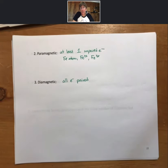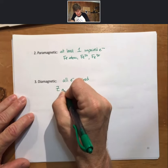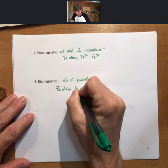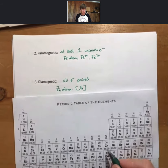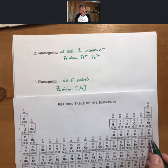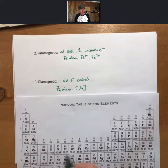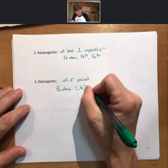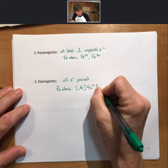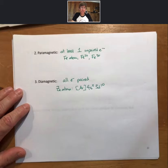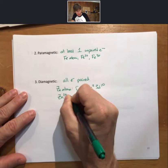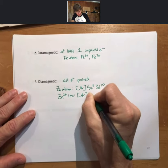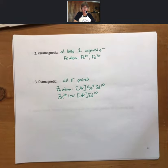While an example of a diamagnetic species would be a zinc atom. Looking at its position on the periodic table, zinc is right here. It will have the same first 18 electrons as argon, 4s2, 3d10. Zinc 2 plus, also a diamagnetic species because it loses the 4s electrons.